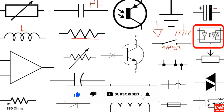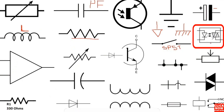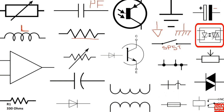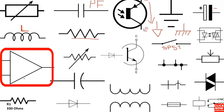Here we have the opto-isolator or optocoupler. We find this kind of component in switch mode power supply boards or flyback power supplies. It includes a diode or LED and a phototransistor that receives the light. When the transistor receives the light it will be activated and the signal will pass through the terminals of the optocoupler. Basically, the optocoupler is used to control and adjust the output voltage.